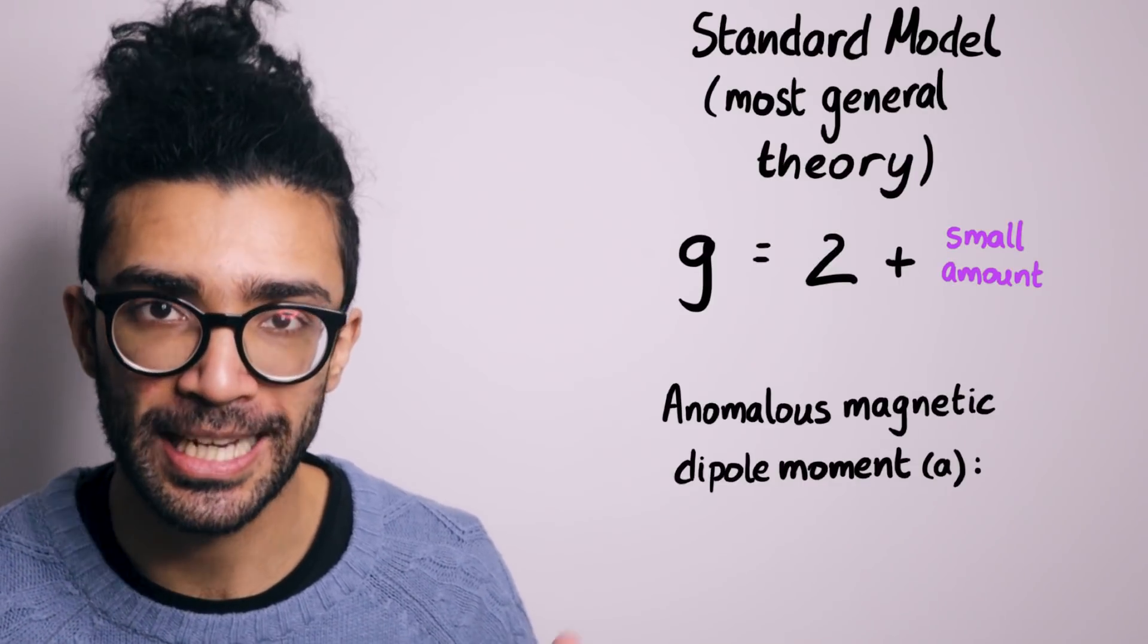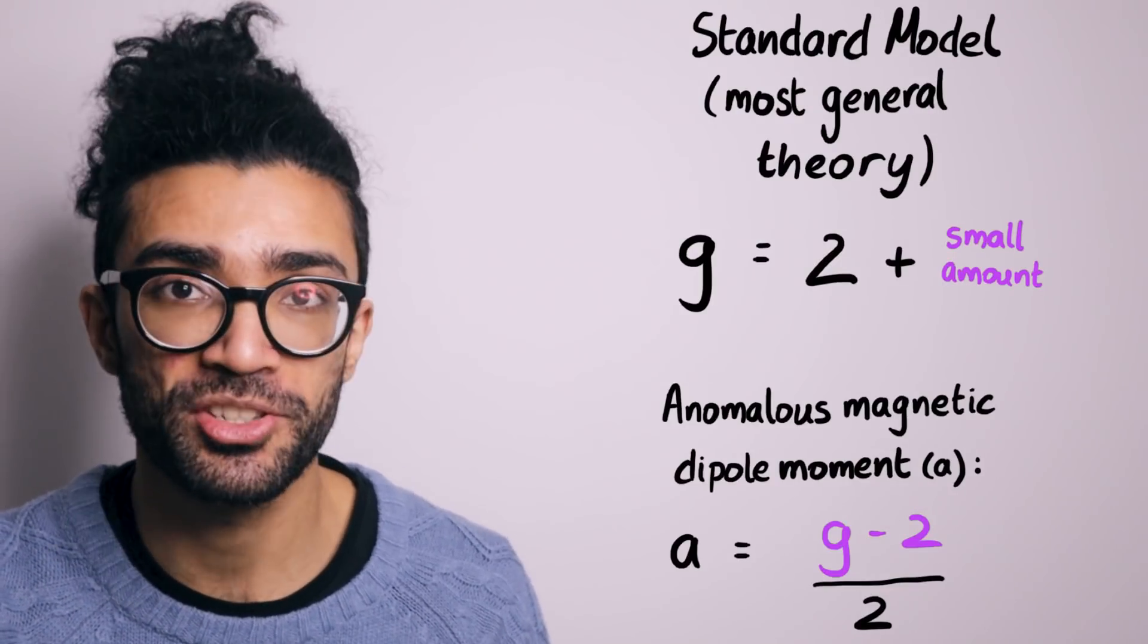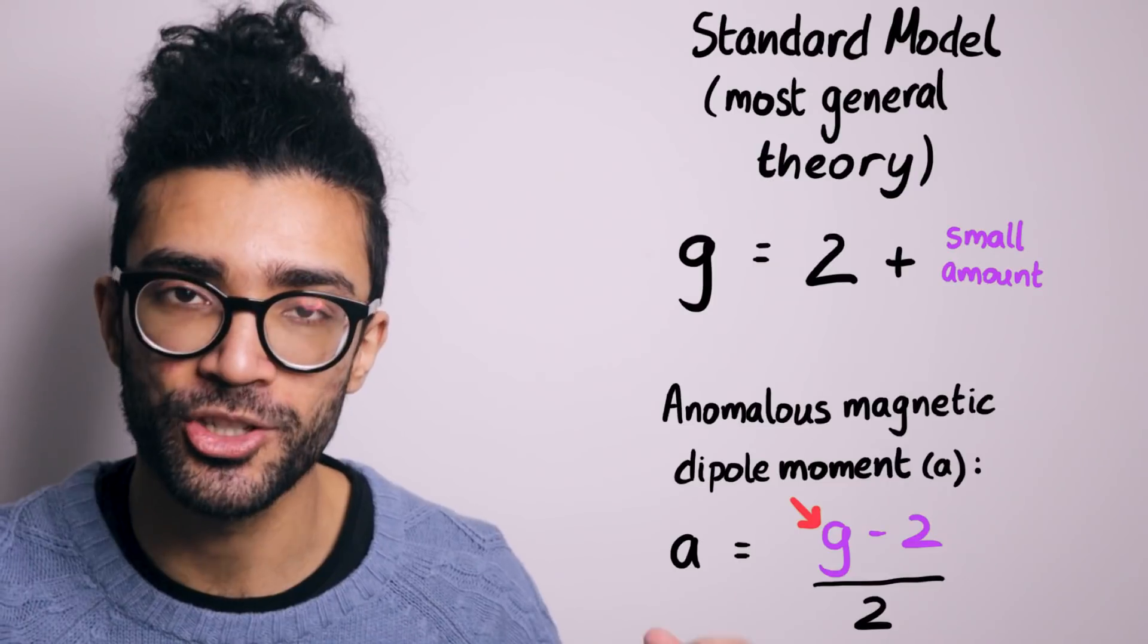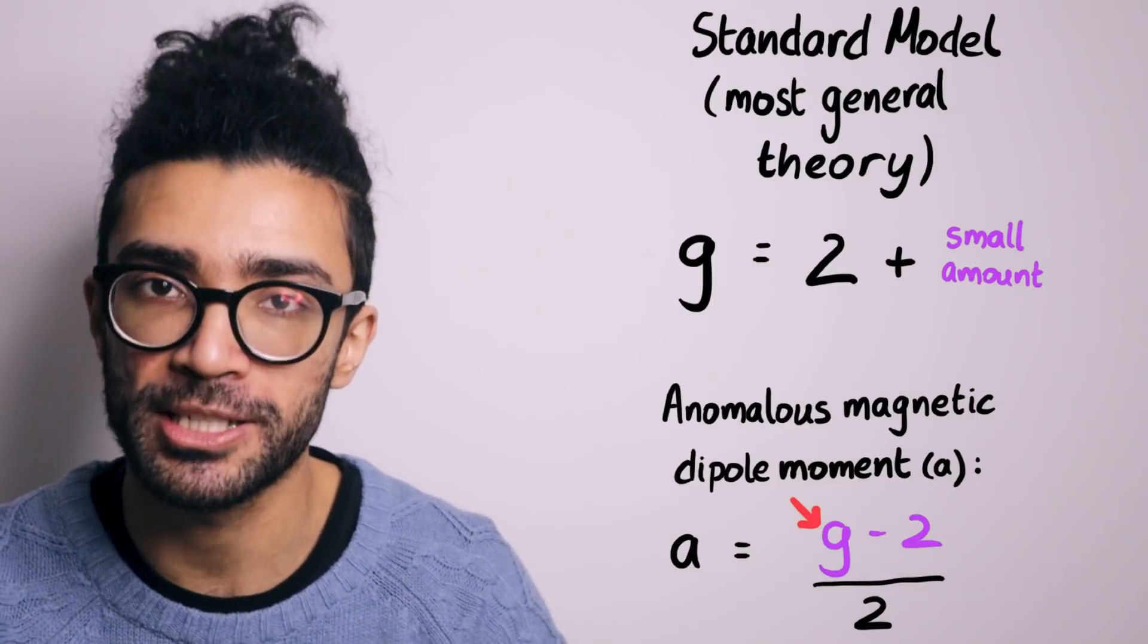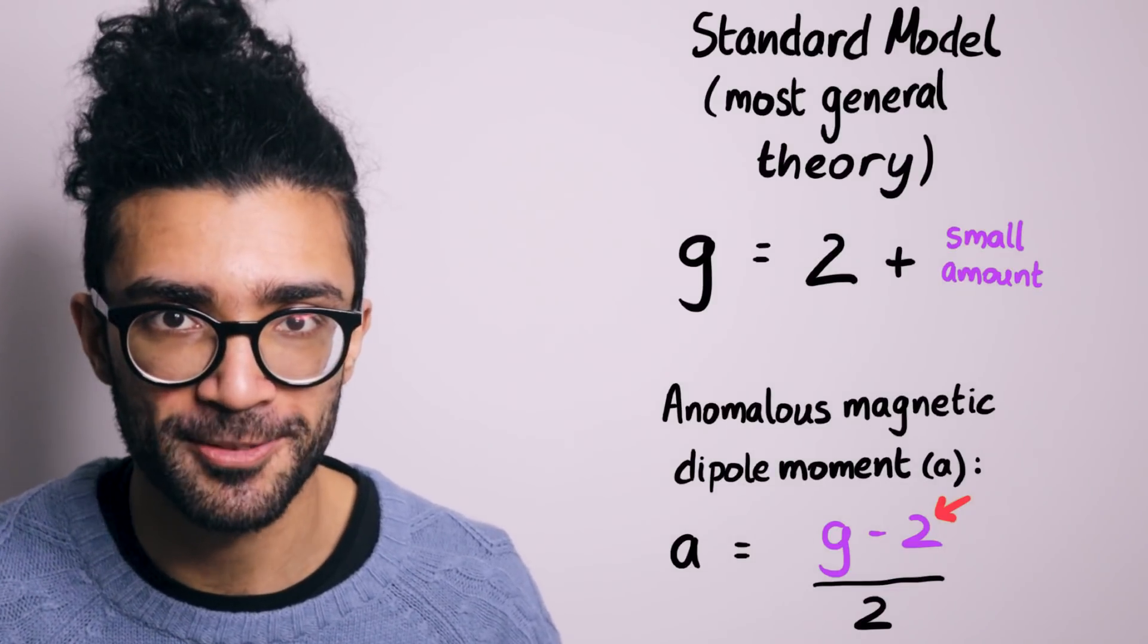which is essentially defined like this. As we can see, the anomalous magnetic dipole moment just measures the difference between the actual g factor value based on all of our theoretical calculations and 2, which is what we expected based on just basic quantum mechanics.